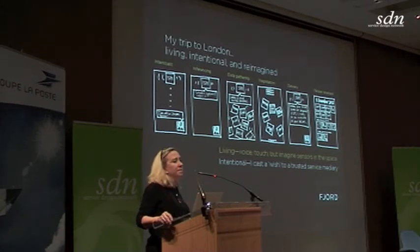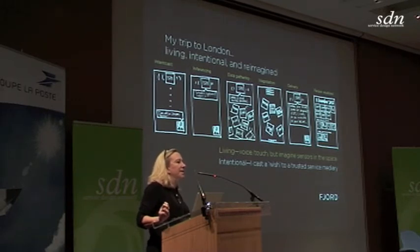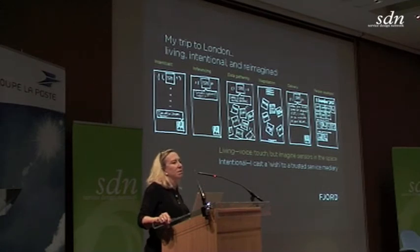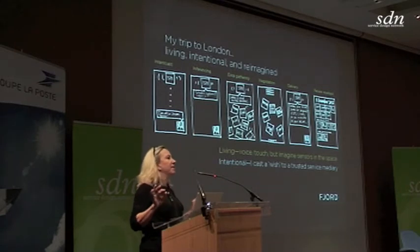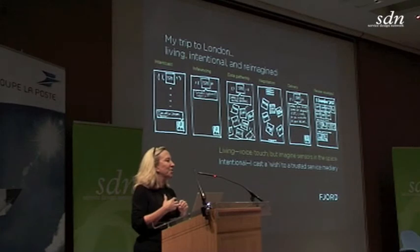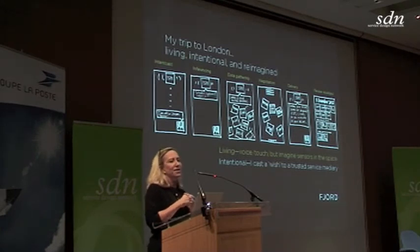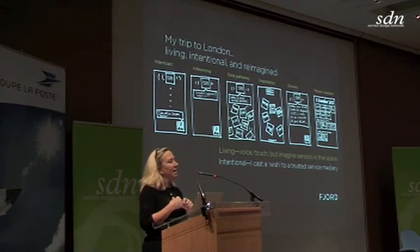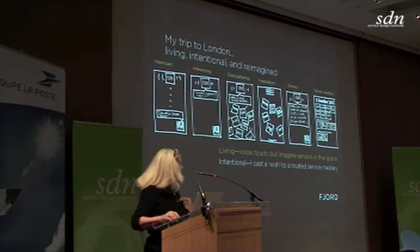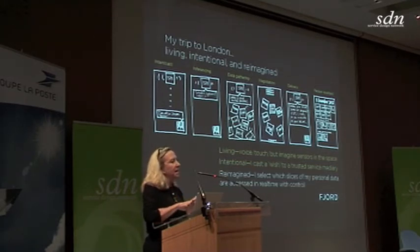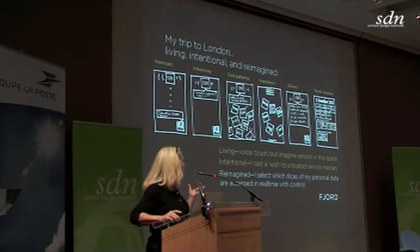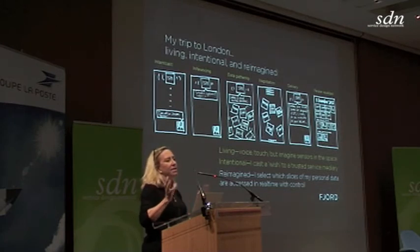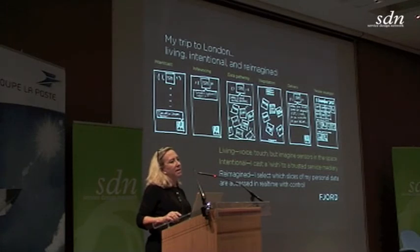I cast a wish to a trusted service mediator. I really wonder how I'm going to choose which mediator that is. Is it going to work if I have multiple mediaries? Who are the appropriate sources that I could trust? I feel like I'm in a different culture here — I think Americans tend to be a lot more trusting of our service providers and less privacy-concerned. But I do think that many, many of these services will be reimagined as I select slices of my personal data, accessed in real time with control, that I've decided are appropriate.